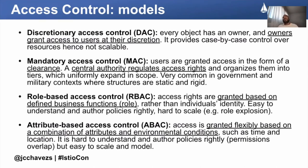This is for example what you have in Google Docs when you give access to certain people. Then you have Mandatory Access Control (MAC), where users are granted access in the form of a clearance. There is a central authority that regulates access rights and organizes them in tiers. This is very common in government and military contexts, like for confidential information and secrets, where structures are very static and rigid.